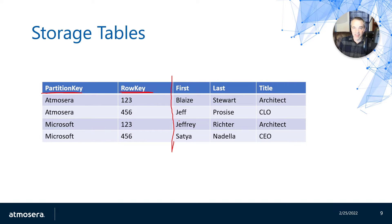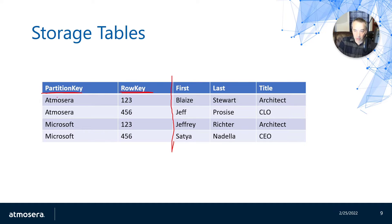That flexibility means you can have different kinds of rows stored in a single storage table, and that has its use cases. There are a lot of things you can do with this that don't necessarily fit traditional RDBMS-style applications. If you need to enforce a given property on a row, you need to make sure it exists whenever you write that record in the code managing this table. The only two properties required for any row in a storage table are the partition key and the row key.